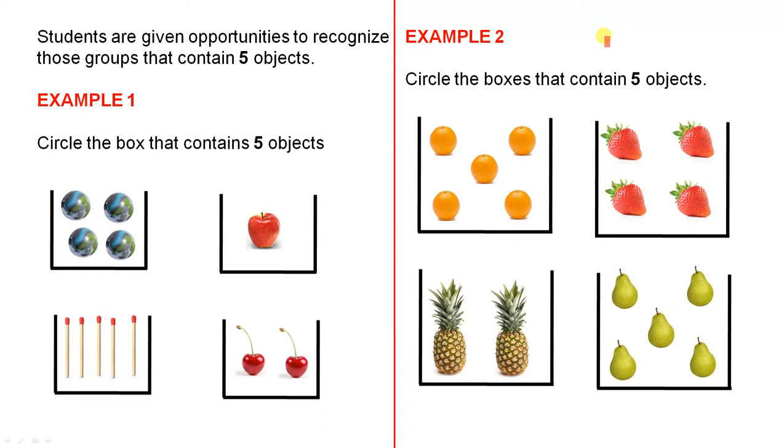For the second example, you would ask them to circle the boxes that contain 5 objects. If they heard the word boxes correctly, they would probably know that it is more than one box and they would be correct. Because they would be circling this box and this one. And you would give them many more opportunities to do exercises like this.